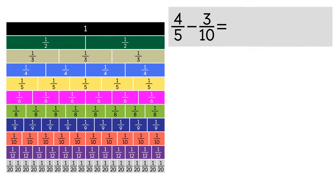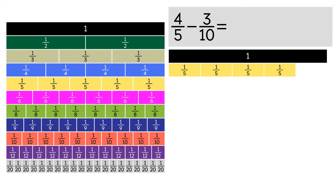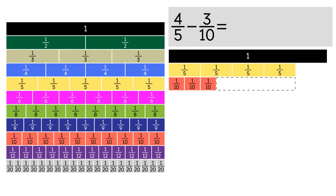We place a 1 as our benchmark. We put 4 strips of 1 fifth to represent 4 over 5. Underneath these strips, we put 3 strips of 1 tenth to represent 3 over 10. This empty space is our difference.